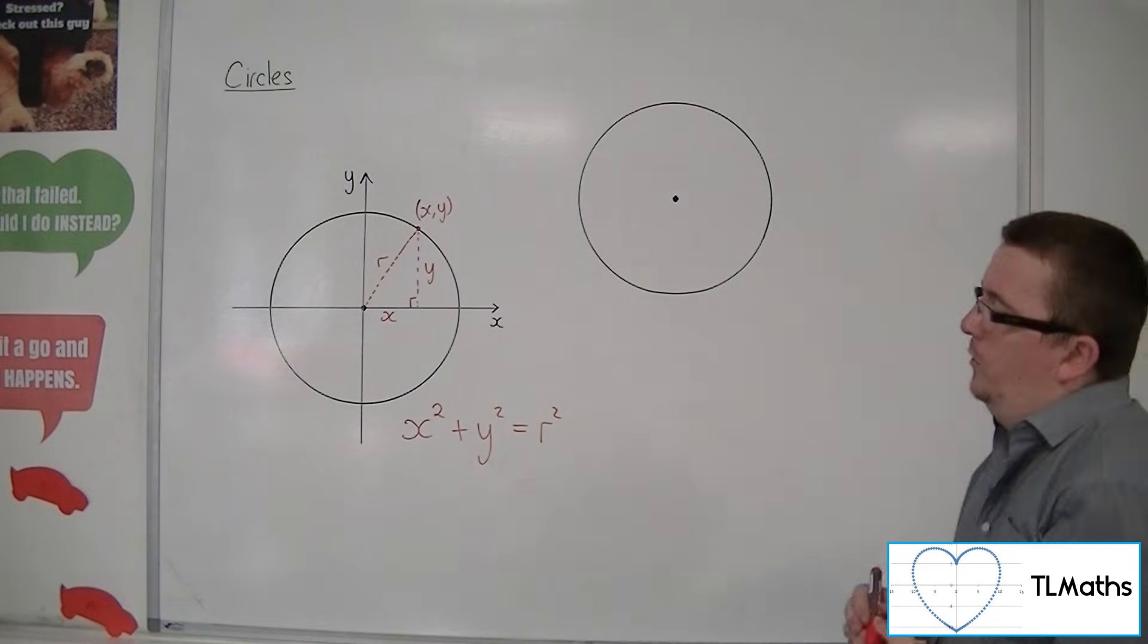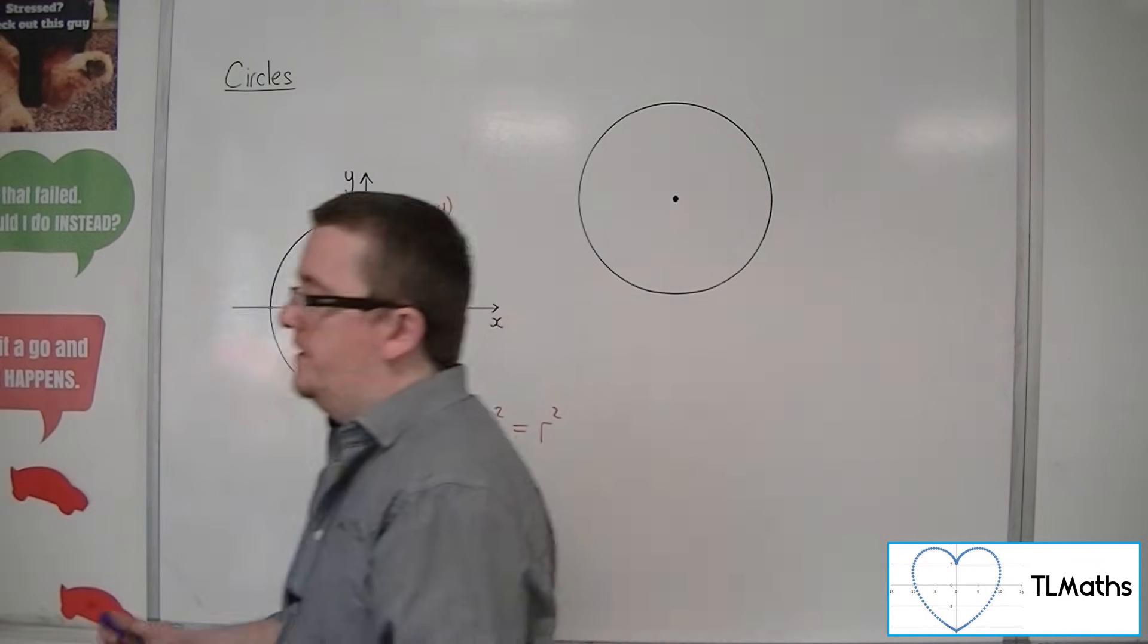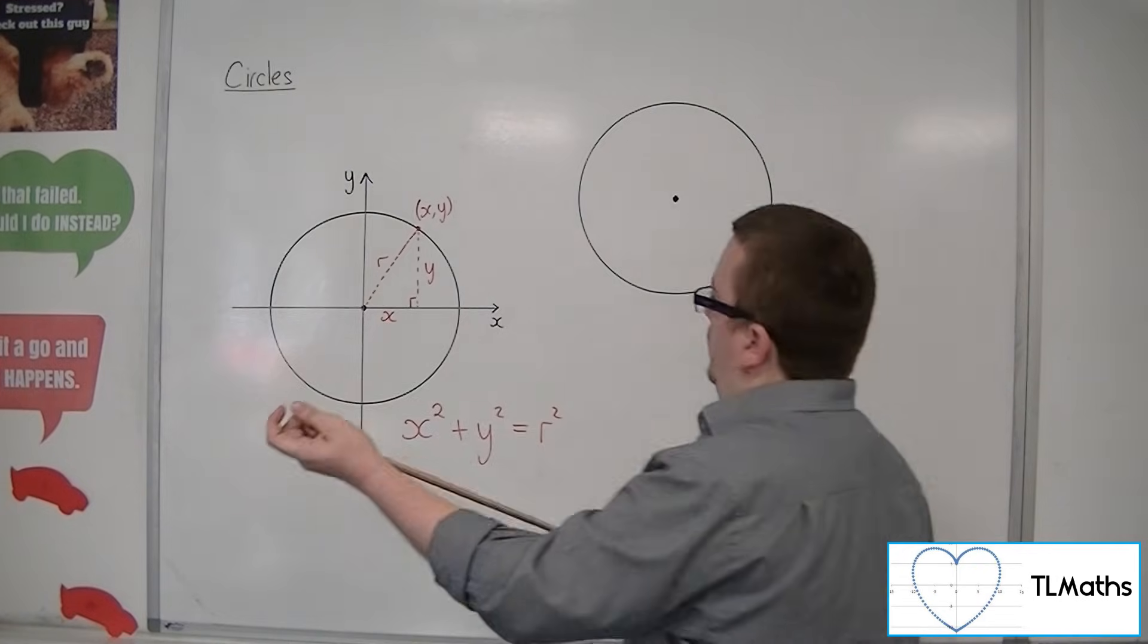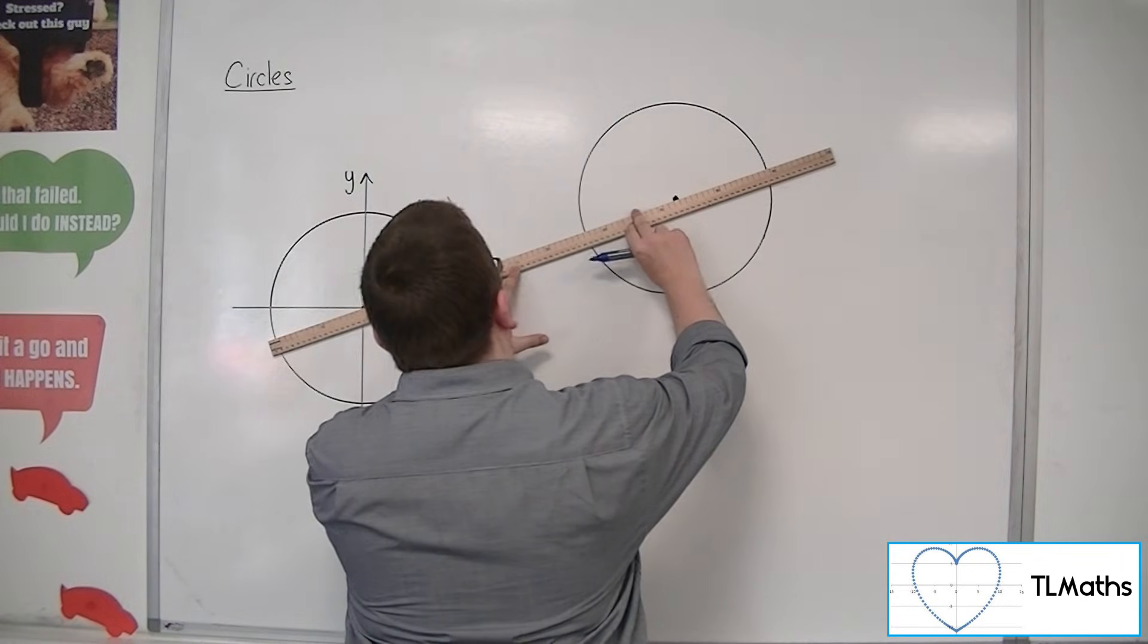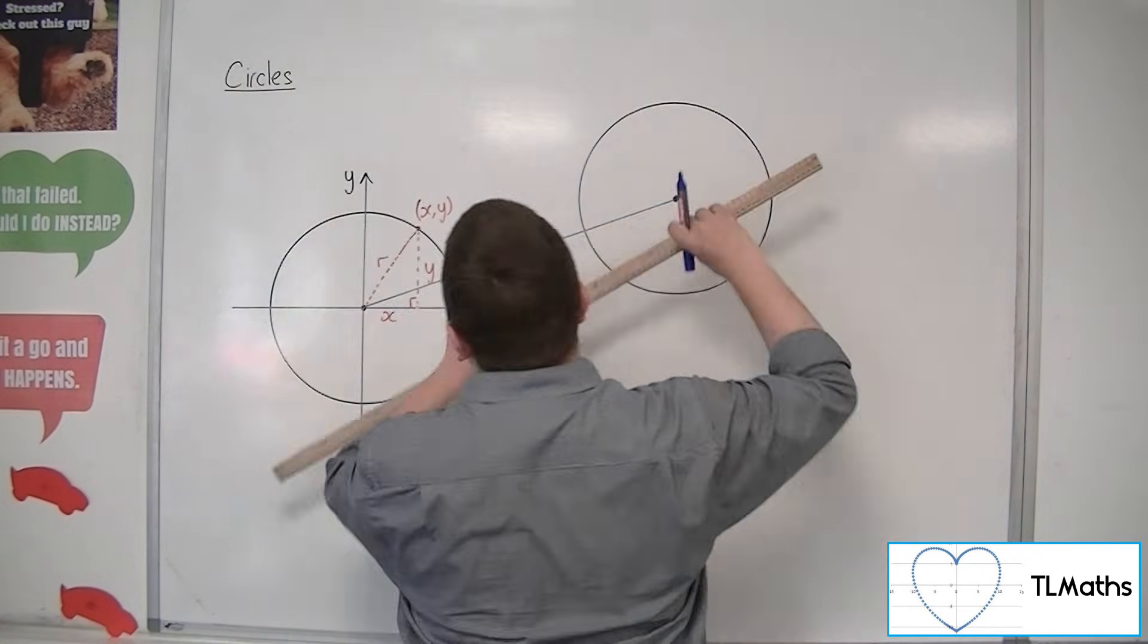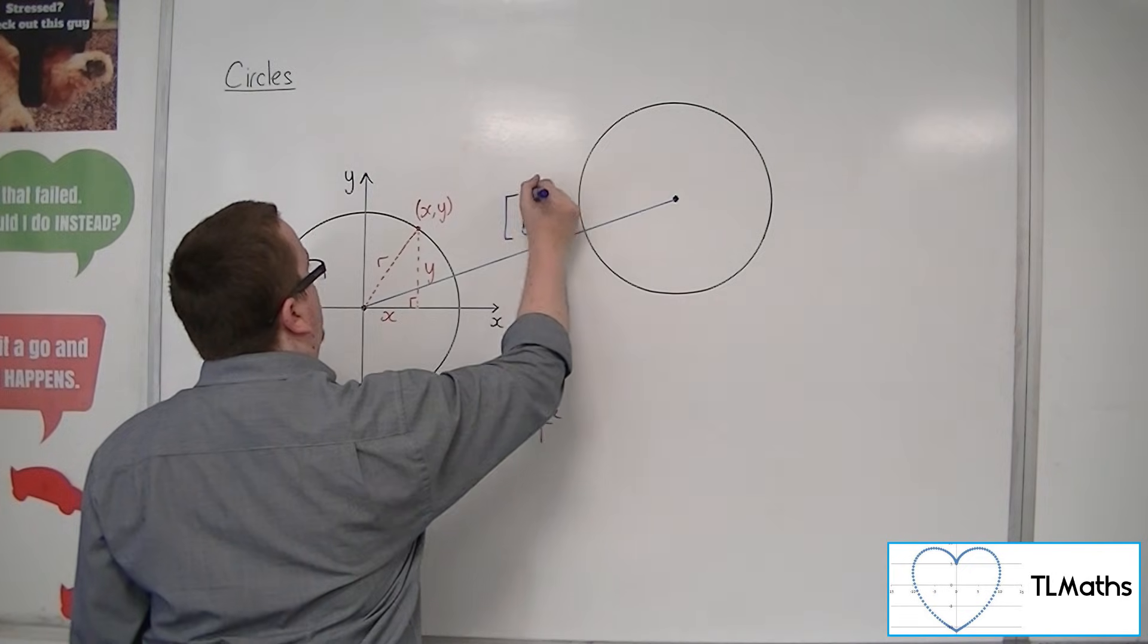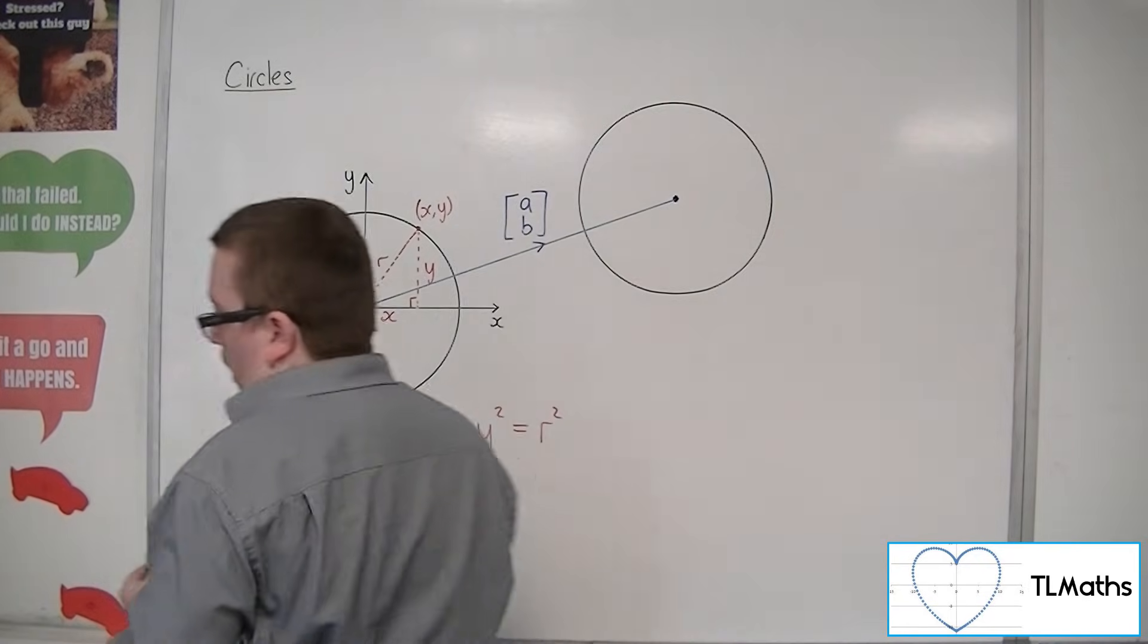Now, let's say I have translated the circle, so I've grabbed it from here and placed it up here. If I draw a line going from one center to the other, then I can refer to that as a vector. I'm going to say it's by the vector AB, so I've gone A along the x-axis, B up the y-axis.